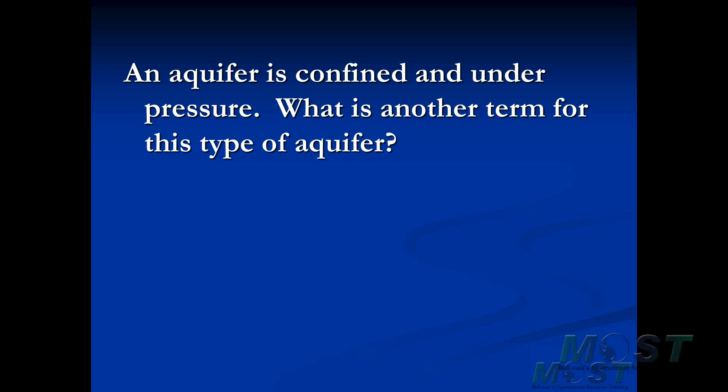An aquifer is confined and under pressure — what is another term for this type of aquifer? One term we would use is artesian. An artesian aquifer is confined, has an aquiclude or an aquitard on top of the aquifer, and that makes the water beneath under pressure. We refer to this as artesian.